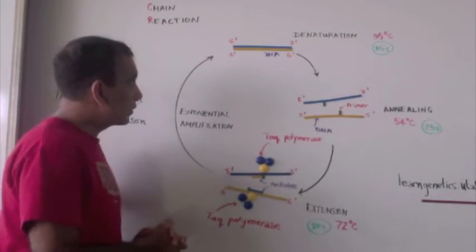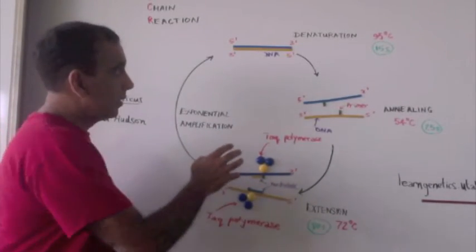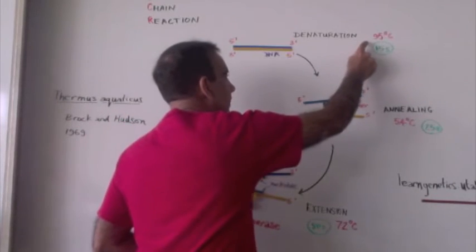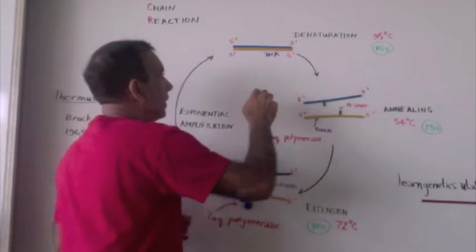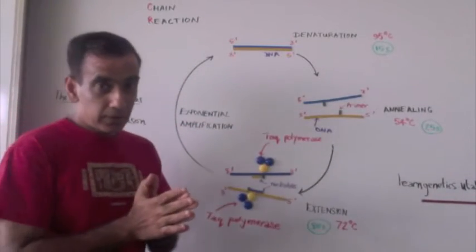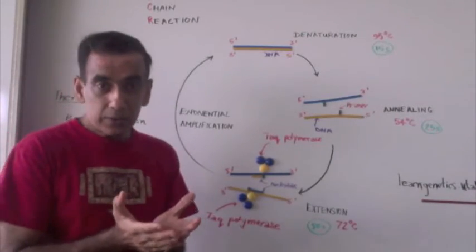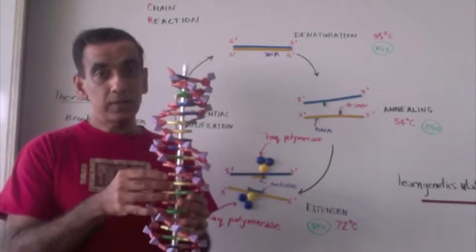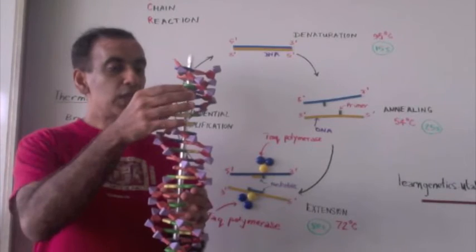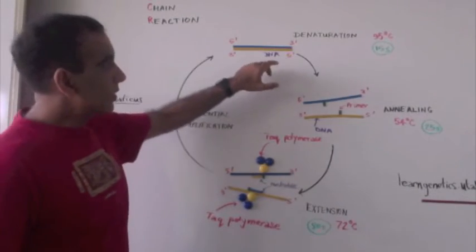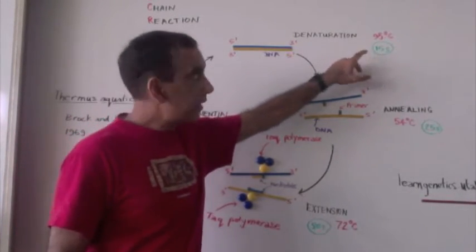In polymerase chain reaction, the first step involves a temperature of 95 degrees Celsius. At this temperature, the DNA is denatured. The hydrogen bonds that hold the chains together are broken. It doesn't take very long, just about 15 seconds, for this denaturation cycle.